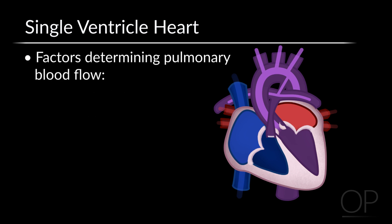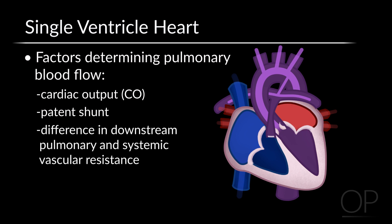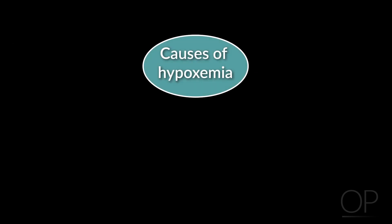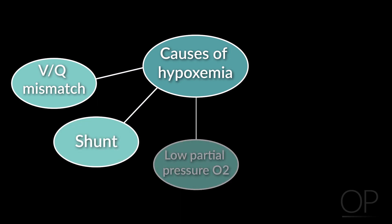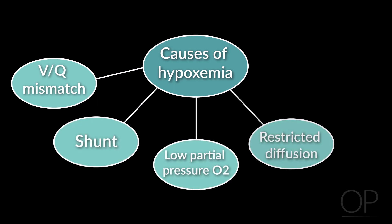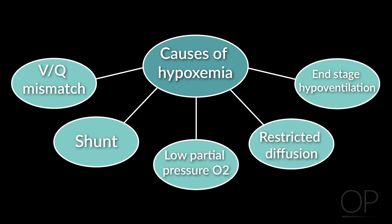The factors that determine how much pulmonary blood flow you have include adequate cardiac output, a patent shunt, and the difference in downstream pulmonary and systemic vascular resistances. Whether your patient has one or two ventricles, when a patient is desaturated, you should always think about the five causes of hypoxemia. These include VQ mismatch, shunt, low partial pressure of oxygen, restricted diffusion, and end-stage hypoventilation.